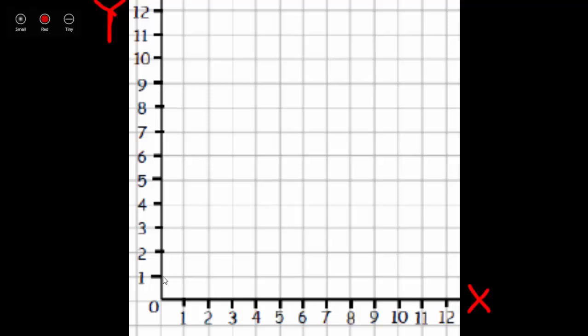Now the origin is the beginning of your coordinate grid, or also known as where your zero, where your two number lines meet.